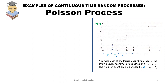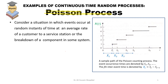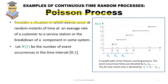We consider the second example of continuous time random processes. We have visited the Gaussian random process, and it's time to look at the Poisson process — named after a French scientist. In this process, which is very common and widely used in networking, events occur at random across time, and the average rate of arrivals or occurrence is going to be lambda.